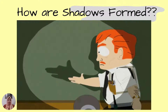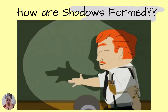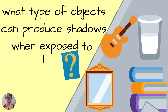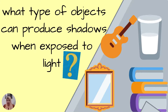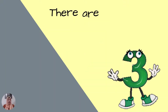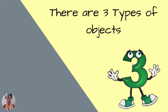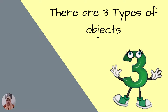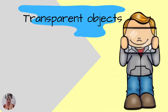But do all objects form shadows? We are going to find out. So what type of objects can produce shadows when exposed to light? Not all objects can form shadows or form good dark shadows. There are three types of objects.